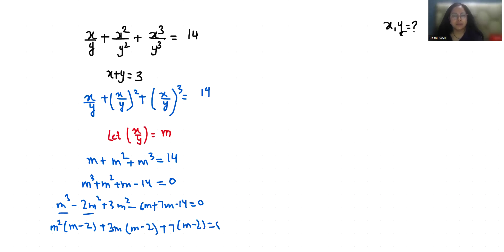Now from m minus 2 equals 0, we get one solution. And m square plus 3m plus 7 equals 0 is a quadratic equation.